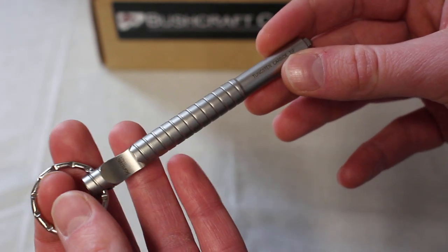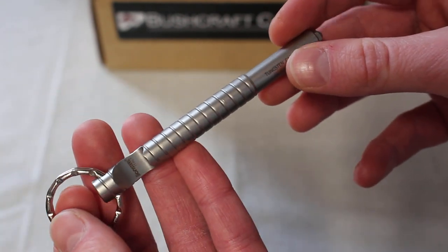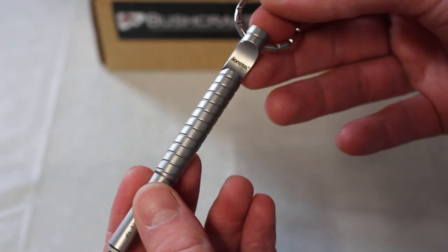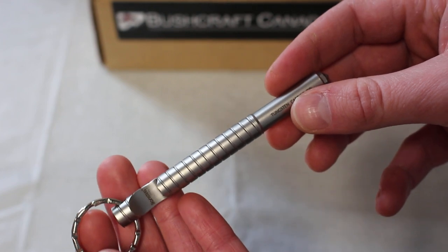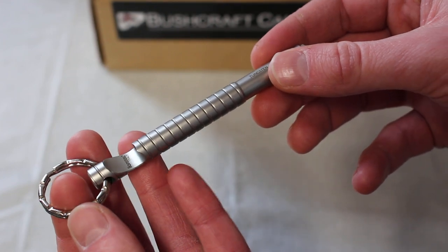The whole body is made of 303 stainless steel and comes with a nice keyring. Overall length is 4.17 inches and the total weight is 1.6 ounces. Yeah, it's a handy little piece to have on your keyring.